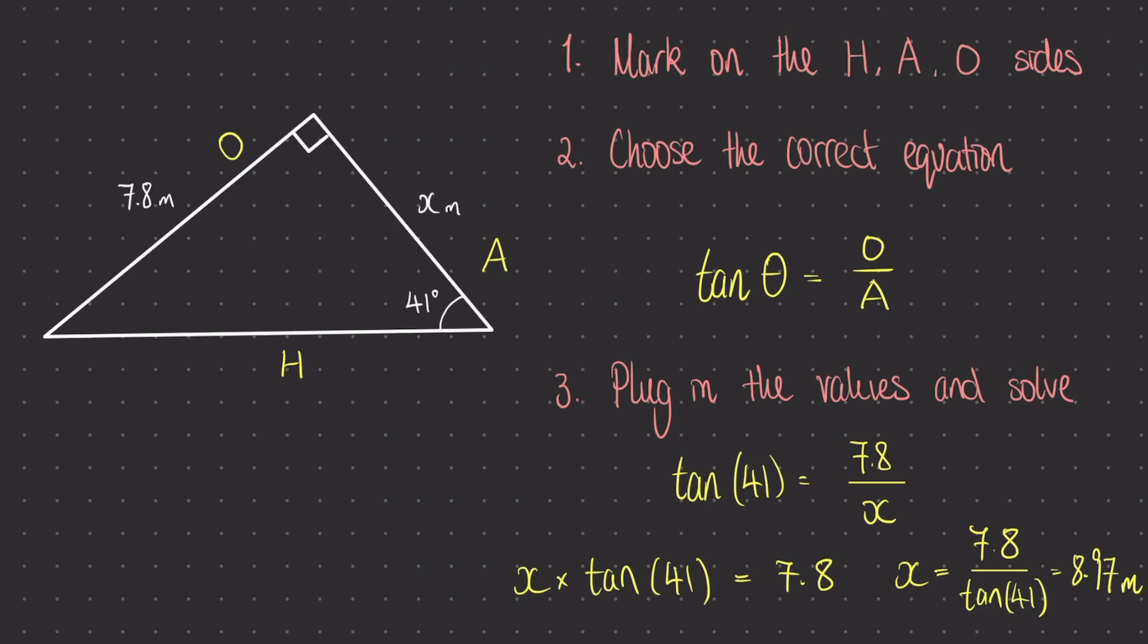So once again the three steps to take when you're solving to find a missing side of your right angle triangle using trigonometry, we are first going to mark on the hypotenuse, adjacent, and opposite, then we're going to pick out the correct equation that links together the two sides that are labelled.